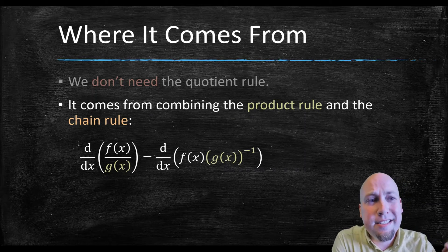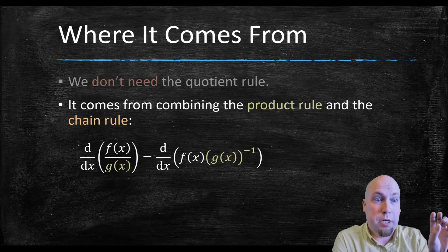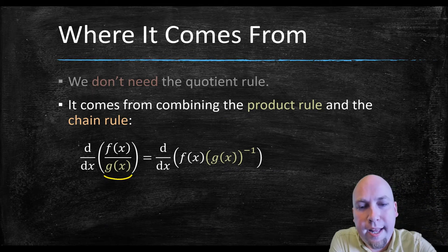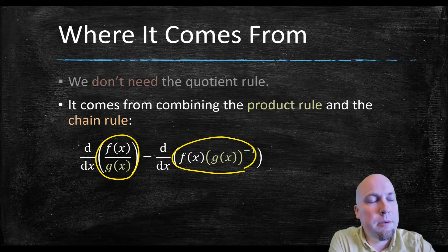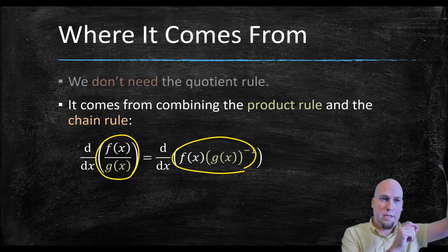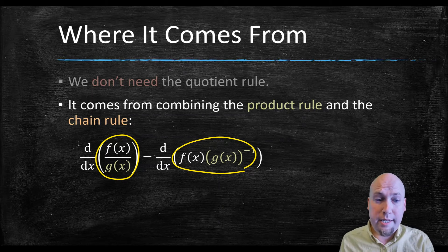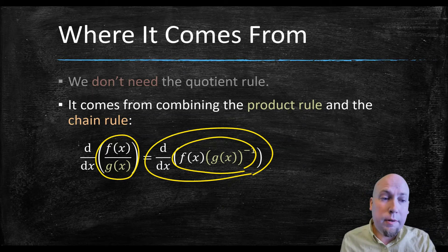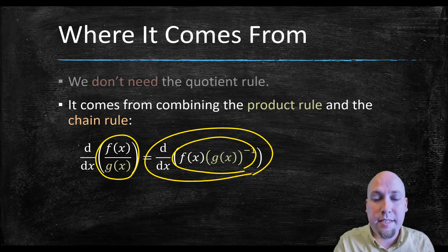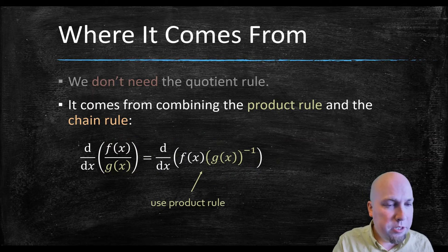The trick is to realize that any quotient of two functions can be written as a product of two functions. You can always write f divided by g as f times g to the power minus one — remember, to the power minus one means one divided by. So I'm just rewriting it in a different way as a product. And the point of that is, now I've got a derivative of a product. I don't need the quotient rule anymore; I've already got the product rule, so I know how to take the derivative of this.